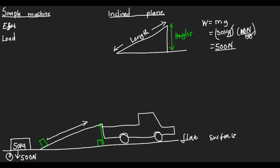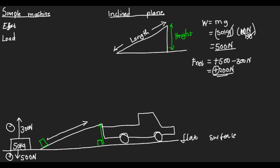We consider the 500 newtons going toward gravity as a positive force. For us to lift this box upward we need to apply a certain force, which we consider negative so it cancels the downward force. Let's say we apply 300 newtons. The net force is 500 newtons minus 300 newtons, which gives positive 200 newtons — so the box will still go down. 300 newtons cannot lift a box with a weight of 500 newtons.